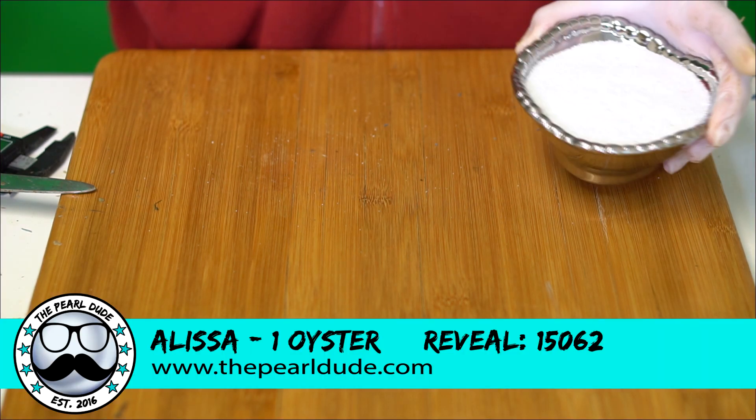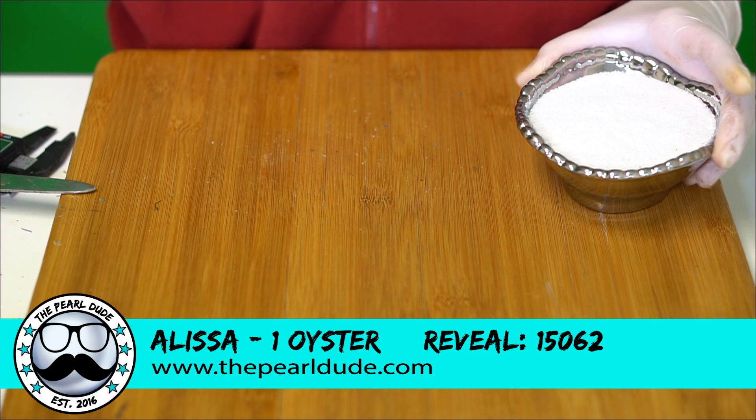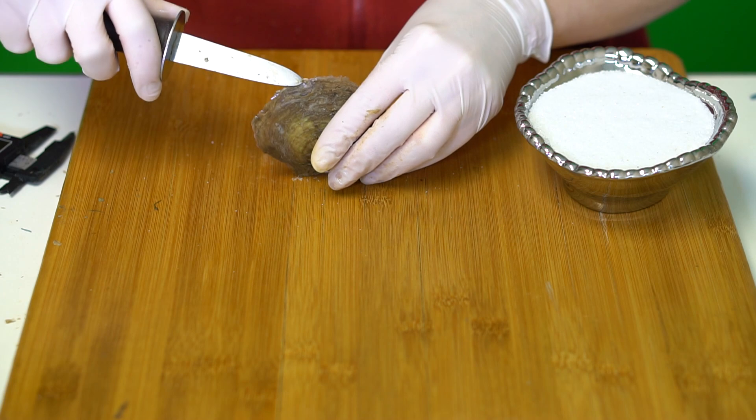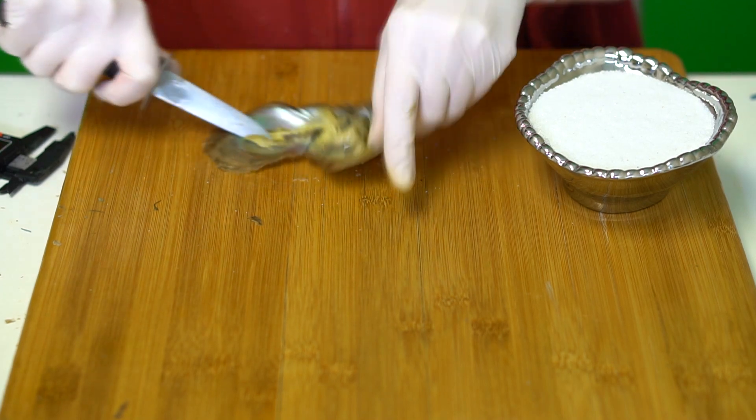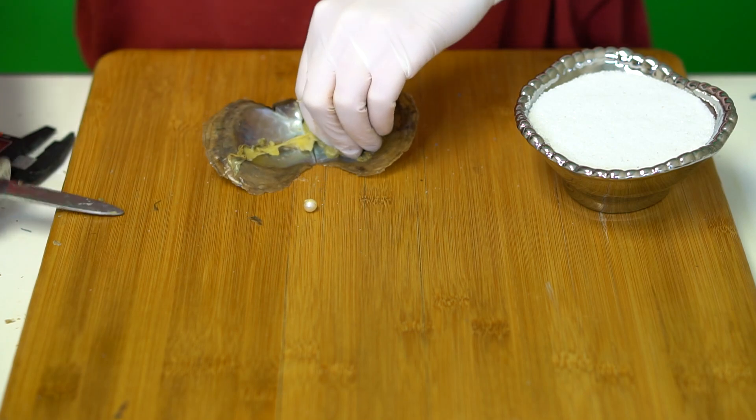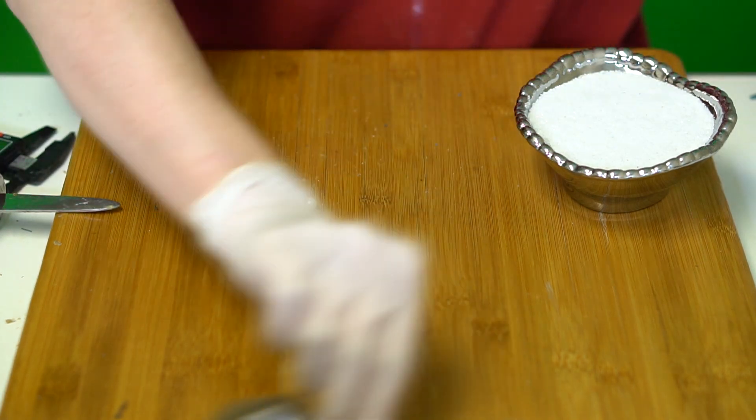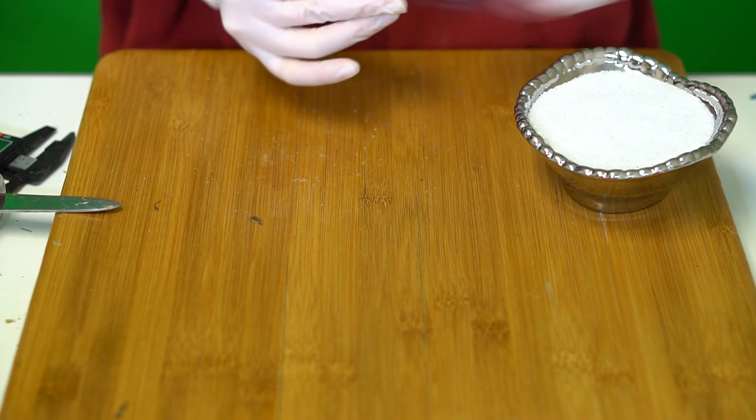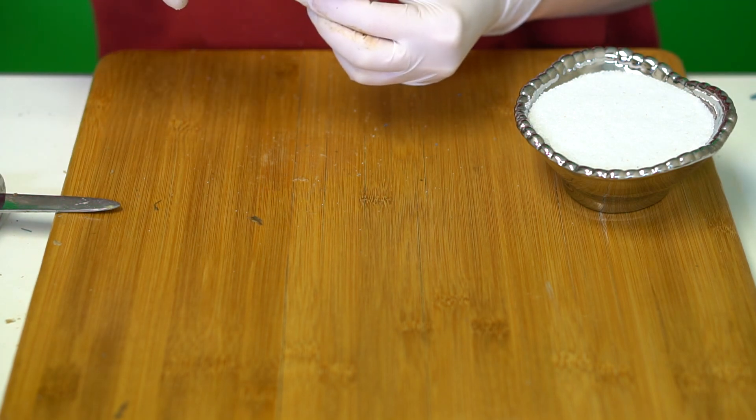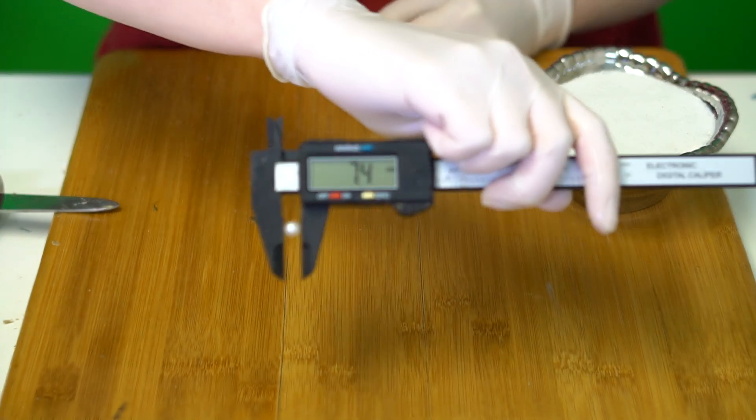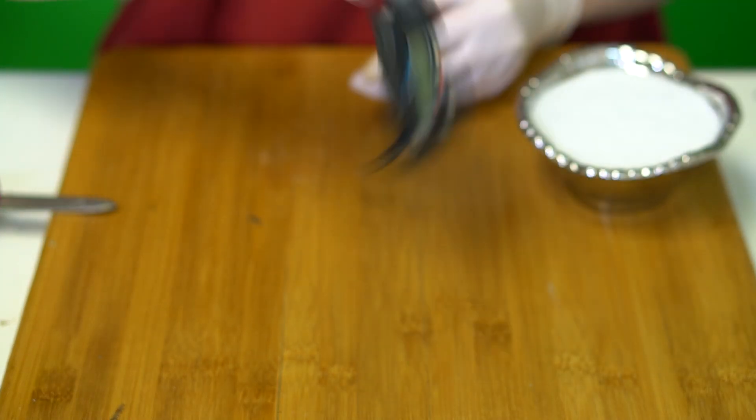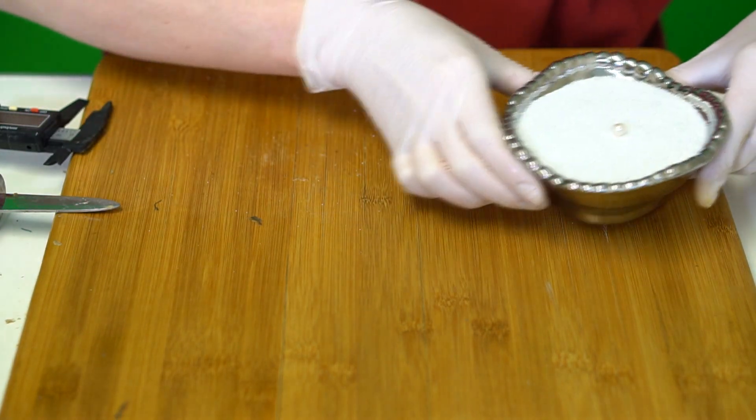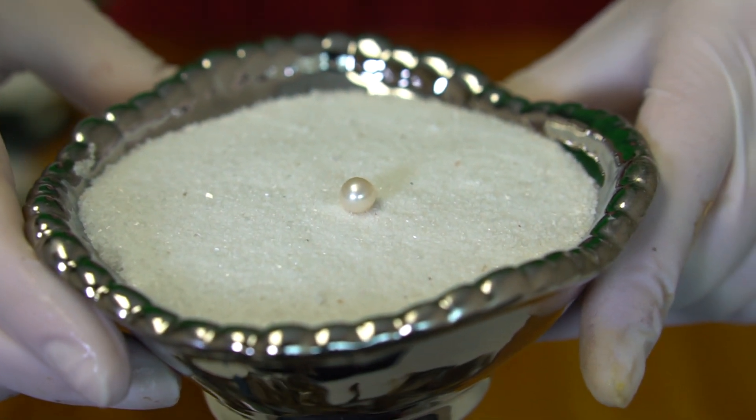Next reveal is for Alyssa, reveal 62. We're opening one oyster. We have a classic white, 7.4. Really pretty white. Congratulations, Alyssa.